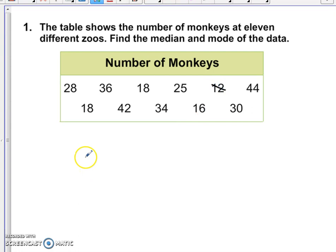So my smallest number is 12. My next smallest number is 16. Then I have two 18s. Then the next smallest number looks like it's 25. And then 28. The next smallest number would be 30. 34. Then 36. And finally, 42, 44.